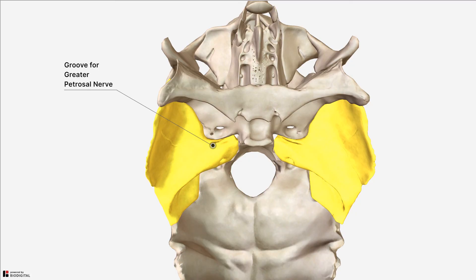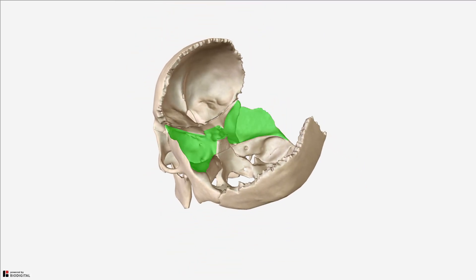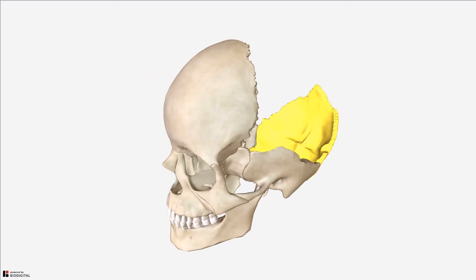So that completes the anatomy of the middle cranial fossa. In the next tutorial, we'll take a look at the posterior cranial fossa. If you have found this video helpful, please like, subscribe and leave a comment below. Thank you for watching.